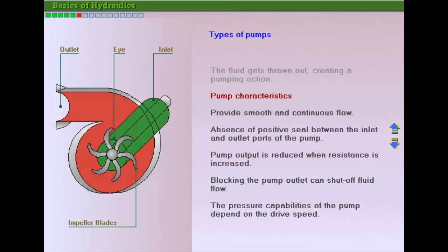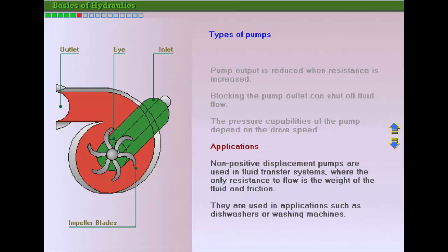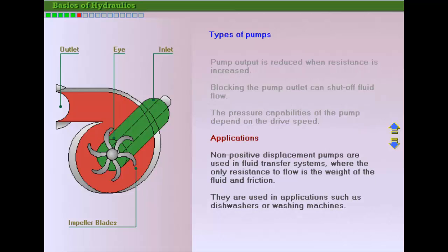These types of pumps do not offer the isolation of outlet and inlet necessary for efficient high-pressure operation with acceptable volumetric efficiencies. Non-positive displacement pumps are used in dishwashers and washing machines, applications where the fluid is not required to move at high pressures.